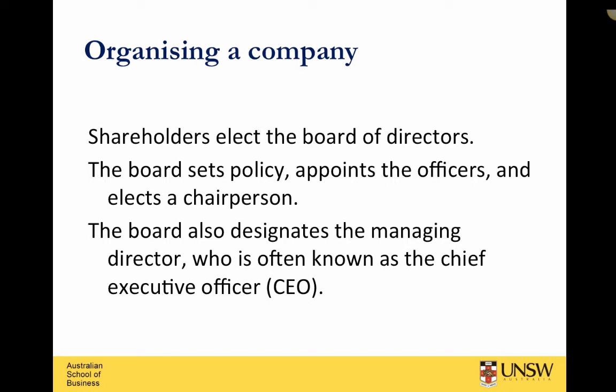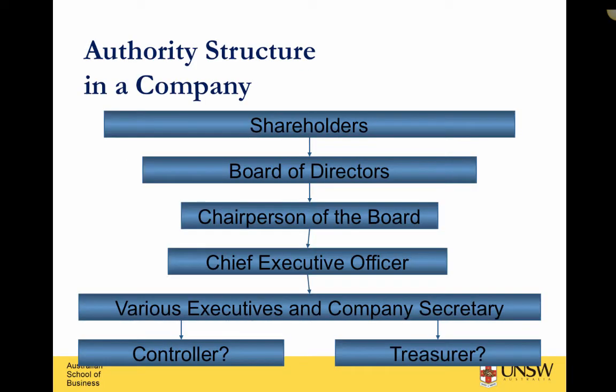A lot of larger Australian companies have separation, with one person as chairperson and another as CEO. Shareholders vote on things and the board of directors reports to the shareholders — that's the function of financial accounting statements, to report and disclose to shareholders. Shareholders are the ultimate authority in the company. The board of directors reports to the chairperson, and the CEO reports to the chair and to the board.